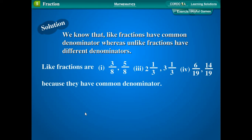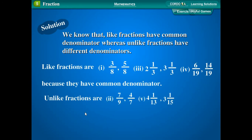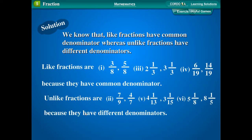Unlike fractions are: 7 upon 9 and 4 upon 7; 4 and 1 upon 13 and 3 and 1 upon 15; 5 and 1 upon 8 and 8 and 1 upon 5 — because they have different denominators.